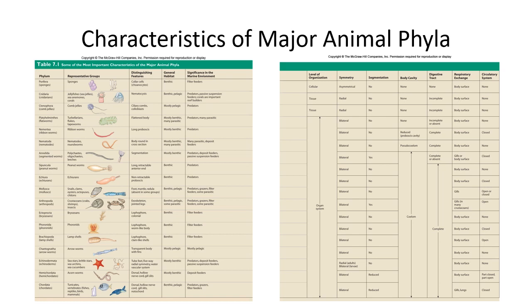This is the table found in your book with all the characteristics of the major phyla we just went over. We'll get to look at some of these in class and have some quizzes before you come to class. That's it.